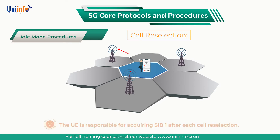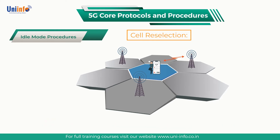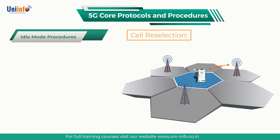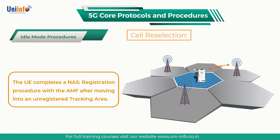The UE is responsible for acquiring SIB1 after each cell reselection to determine whether or not the UE remains located within a registered tracking area. The UE completes a NAS registration procedure with the AMF after moving into an unregistered tracking area.